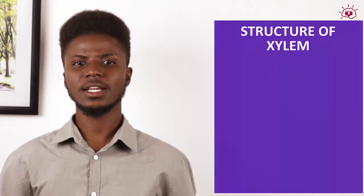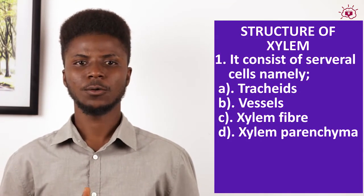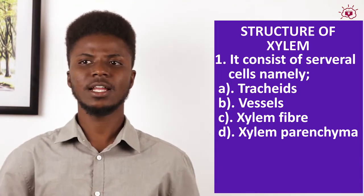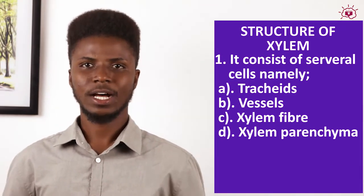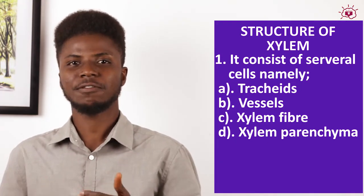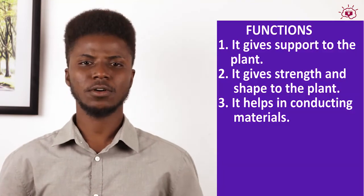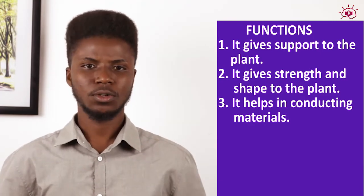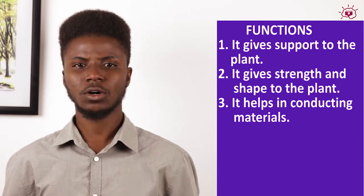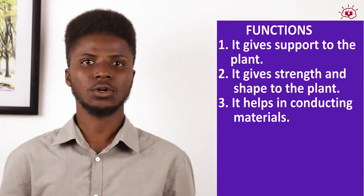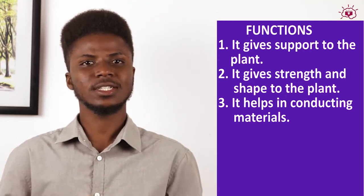The xylem consists of several cell types: the tracheids, the vessels, the xylem fiber, and the xylem parenchyma. The xylem fiber has the same function as the fibers of sclerenchyma. The major function of xylem is support; it also gives strength and shape to the plant. Additionally, it helps in conducting liquid materials like water and mineral salts through the plant — it is a conducting tissue.